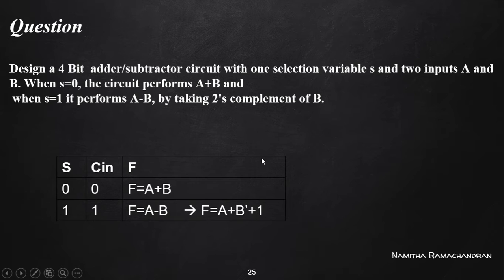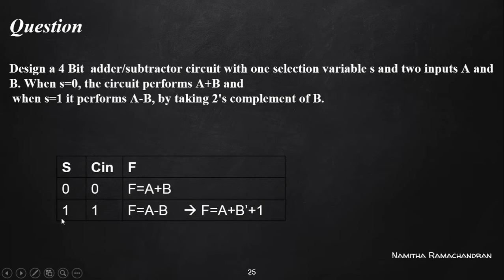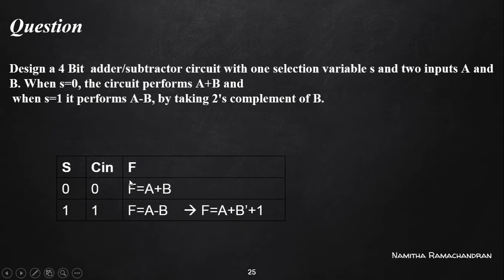Based on this given information, we can consider this function table. With S equal to 0, the expected output is F equal to A plus B. When S equal to 1, the expected output is F equal to A minus B, implemented as the two's complement addition: F equal to A plus B-complement plus 1.